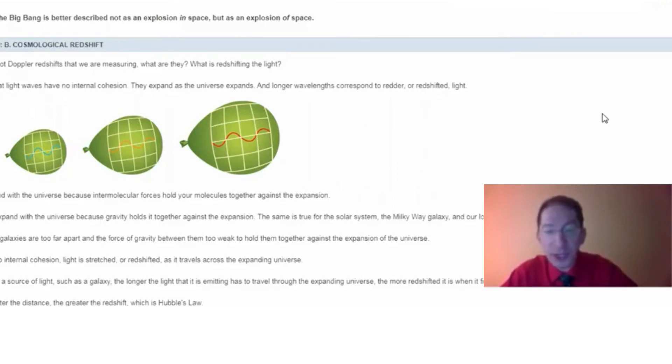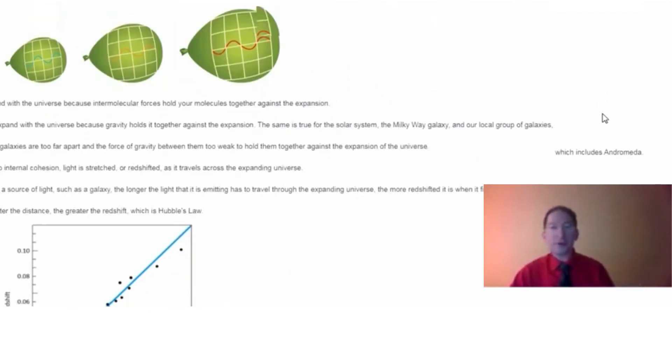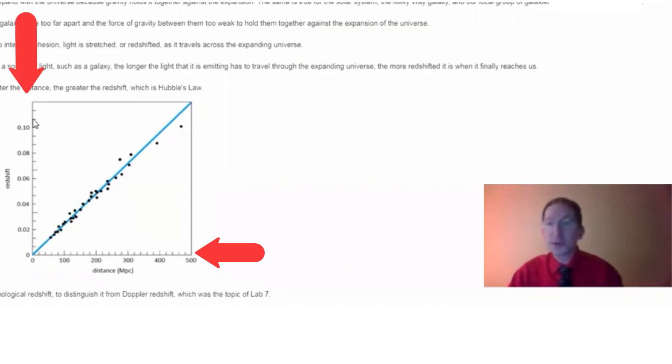Since light has no internal cohesion, as the universe expands, it gets stretched out. And the longer the light travels through the universe, the more stretched it gets. So, the more distant the object, the longer the light has to travel, the more redshifted it is by the time it gets to us. And that is, after all, Hubble's law. The greater the distance, the greater the redshift that we measure. Now, sometimes, like we saw in this figure before, we take these redshifts and multiply by the speed of light to turn them into Doppler velocities. But these are only apparent velocities. Again, these objects are not moving through space. This is not a Doppler effect. It's caused by the stretching of space itself. Now, to distinguish these redshifts from Doppler redshifts, they have a different name, and we call them cosmological redshifts.